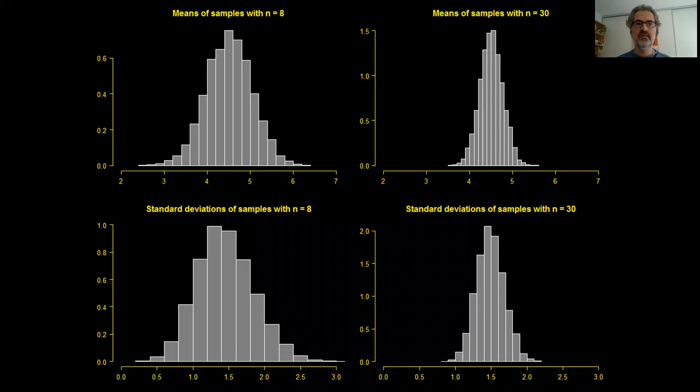So these are the histograms for the means and standard deviations. This up here is the histogram of the means of the small samples, means of samples with n equals 8. And this here is the histogram for the means of samples with n equals 30. And this is the histogram for the standard deviations of the small samples and the histogram for the standard deviation of the somewhat larger samples. As you can see, there is a substantial range of possible outcomes.